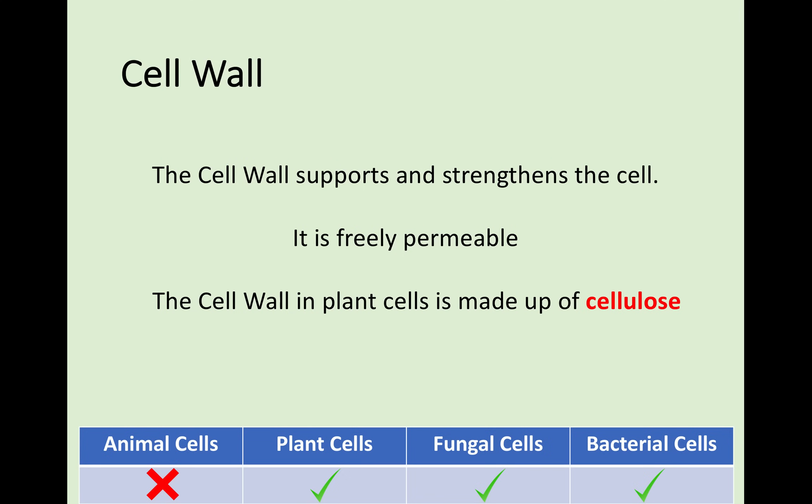We'll start off with the cell wall. You find the cell wall in all of these cells apart from animal cells, and their role is to support and strengthen the cell. It is freely permeable, which means it allows everything to move through it. The point of the cell wall is to support and strengthen the cell, and an important note is that it is made up of a structural carbohydrate called cellulose. If you think that cellulose has the word 'cell' in it, just try and remember that is what it is made up of.